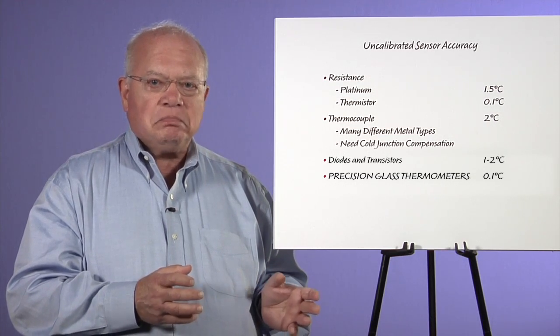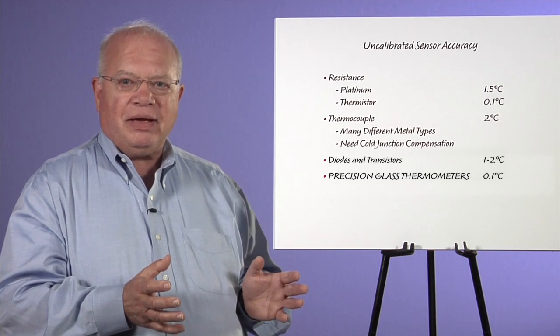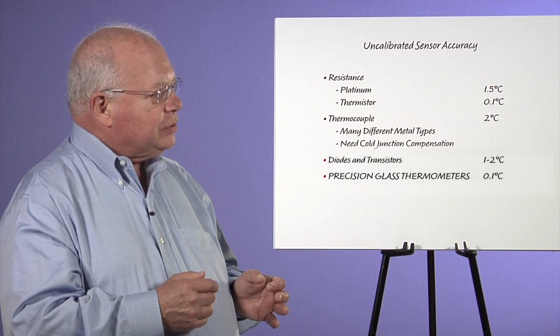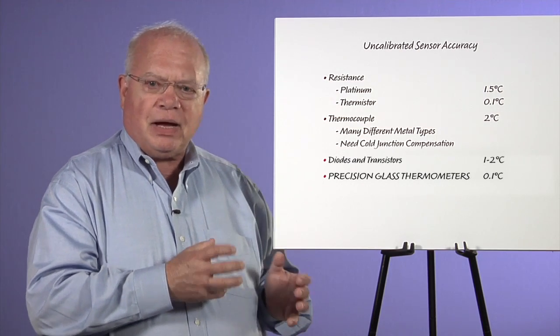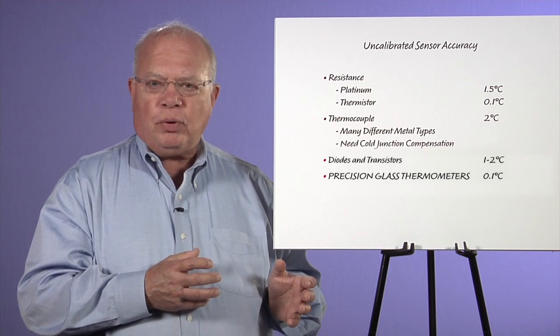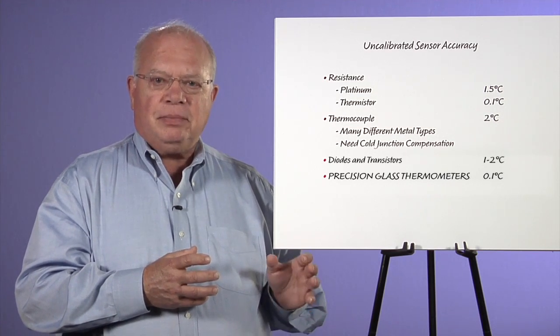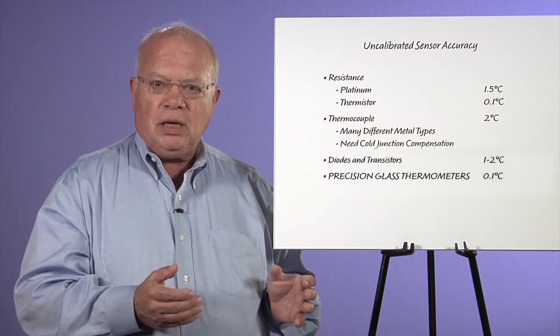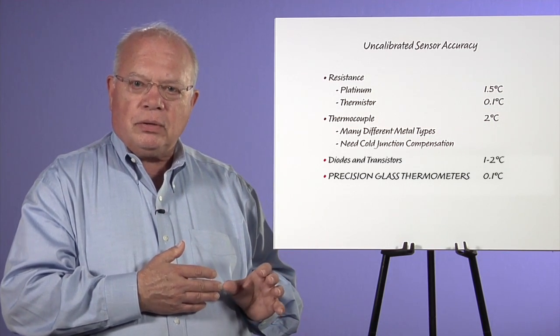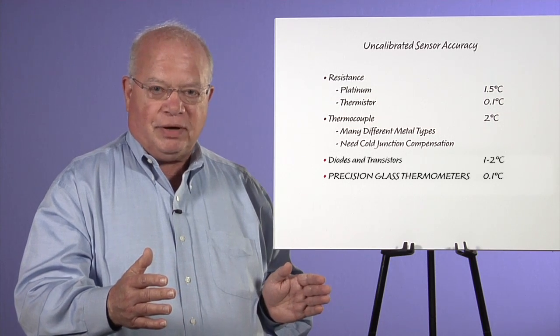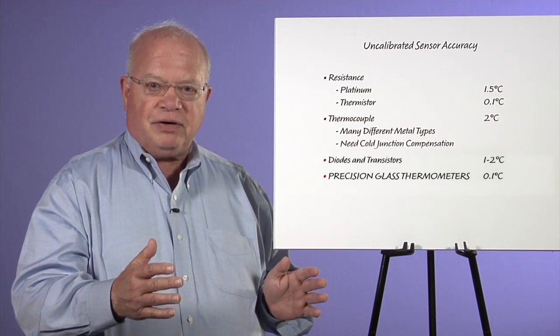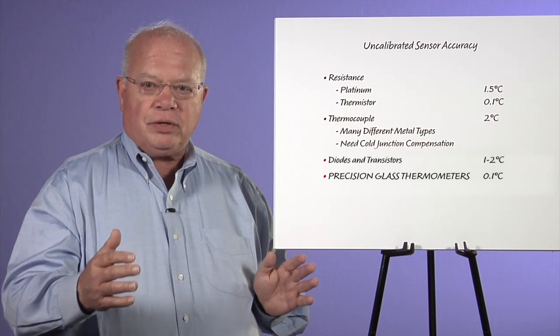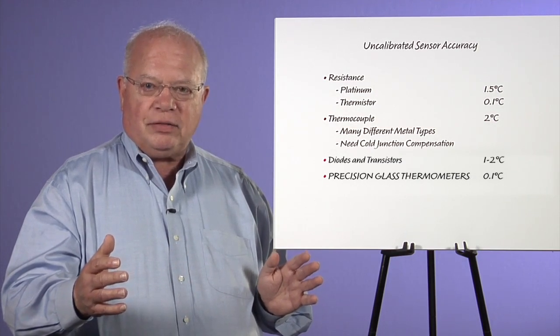Diodes and transistors are 1 to 2 degrees, and we have circuitry that compensates for some of the errors within a diode as a temperature sensor. Thermocouples put out microvolts. Their output is proportional to the temperature difference between the cold side and the hot side, and they actually generate voltage. The error is usually specified at max temperature differential and can be anywhere between 1 and 4 degrees for an uncalibrated thermocouple.